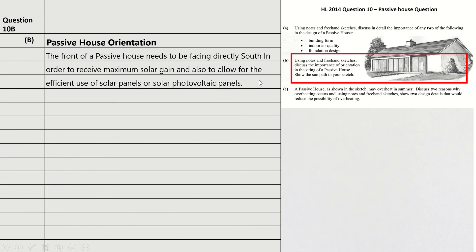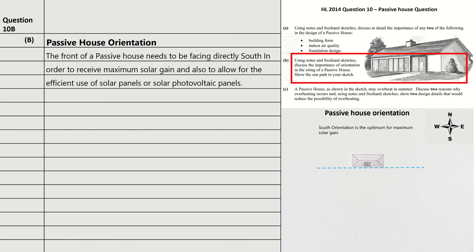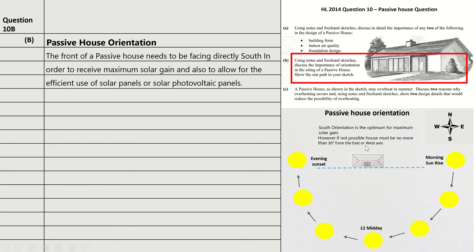For passive house orientation, the front of a passive house needs to be facing directly south in order to receive maximum solar gain and to allow for the efficient use of solar panels or solar photovoltaic panels. Make sure you put your compass in your sketch. The south orientation is the optimum. The sun rises in the east, travels around, and at 12 midday it's at its highest in the sky regardless of whether it's winter or summer, then sets in the west. If facing directly south is not possible, the house must be no more than 30 degrees from the east or west axis.